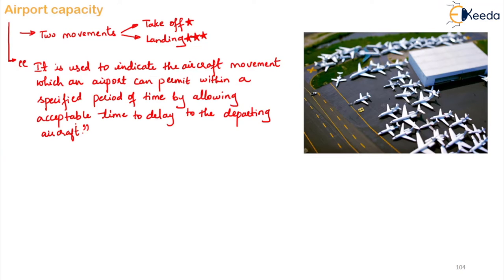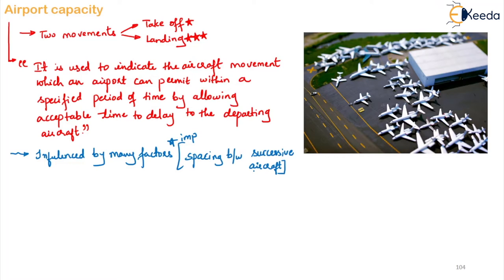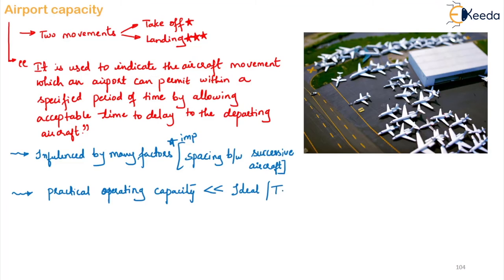Airport capacity is influenced by many factors, the major and important one being the spacing between successive aircraft. Whatever will be the ideal airport capacity, it is reduced to some extent by practical considerations. So normally we have to design a little higher, because when it comes to practical consideration it gets reduced. Your practical operating capacity is less than the ideal or theoretical capacity.